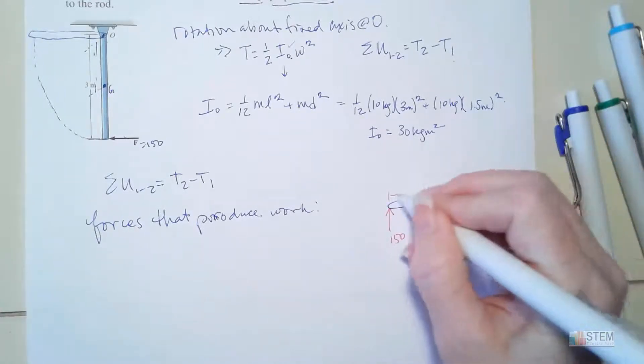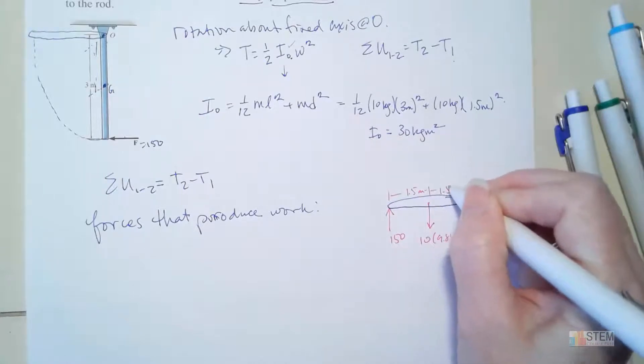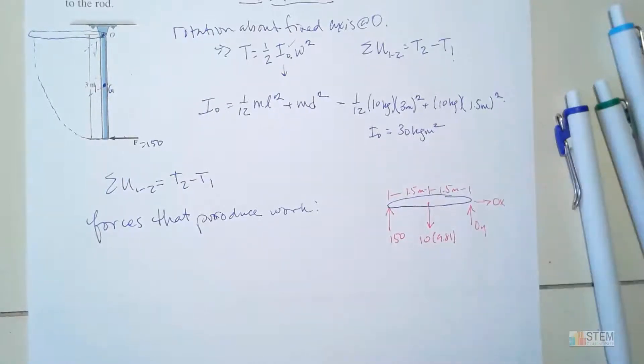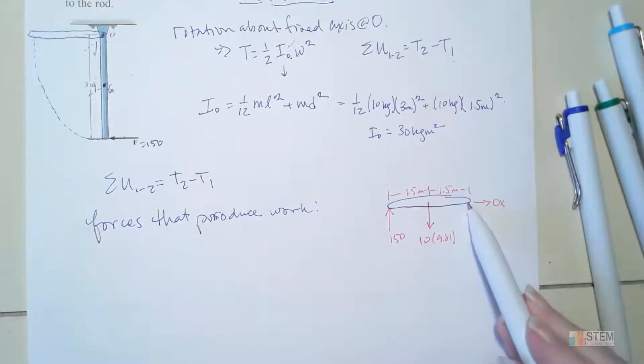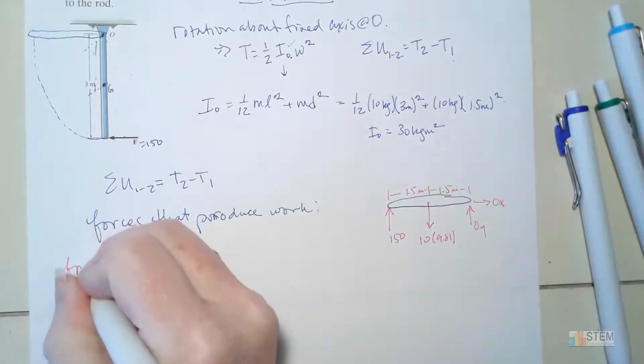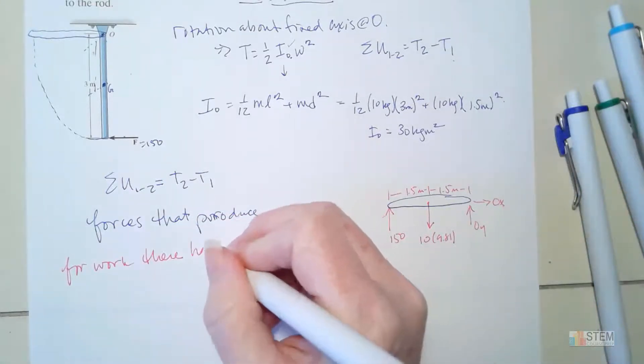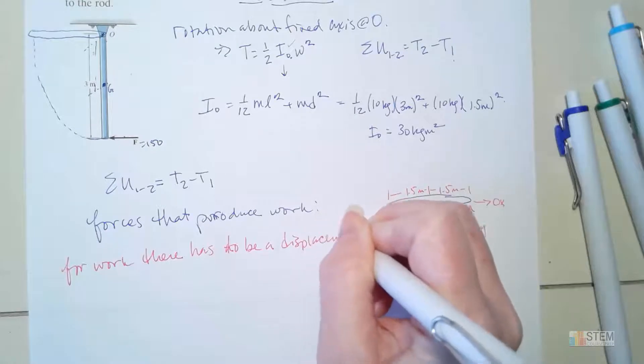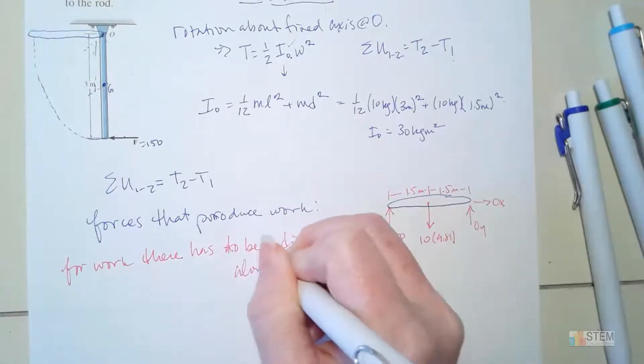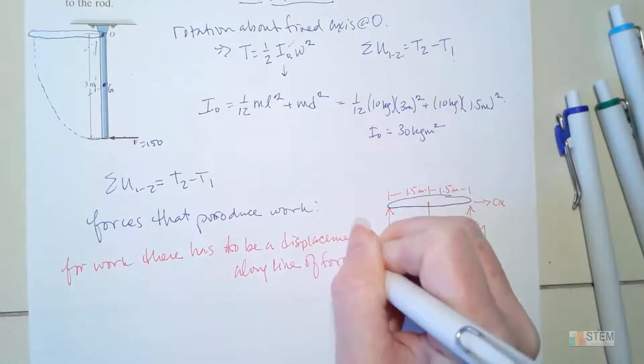So we want to look here and see which one of these forces are going to produce work. Will O_X and O_Y produce work? No, because O does not have a displacement in the direction of those forces. O is fixed in place. So there is no work being done by O_X or O_Y. Because for work, there has to be a displacement in the direction or along the same line as the force.